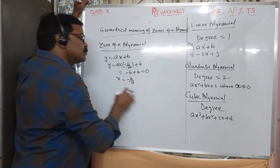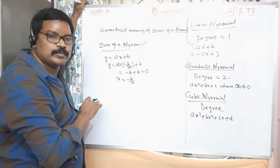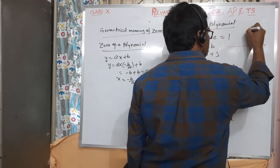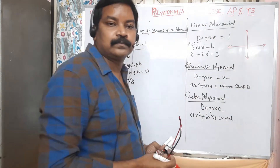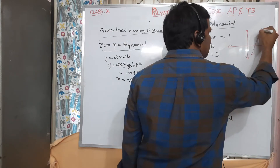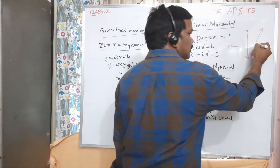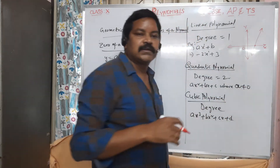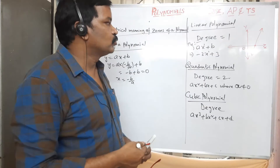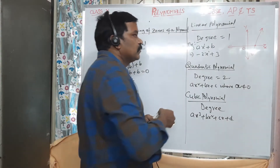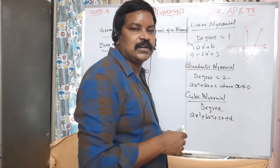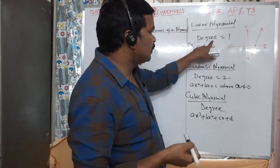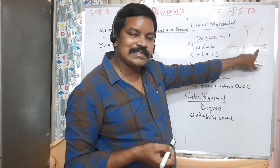The graph of a linear polynomial is a straight line. It intersects the x-axis at exactly one point. As you already learned in 9th class, a linear polynomial represents a straight line that intersects the x-axis at one point.